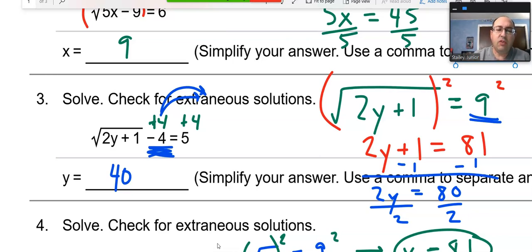I know that they say check for extraneous solutions in some of these, because if you take the value that you get, in this case, we ended up with 40, and we plug it back in, we're supposed to get 5. We end up getting 5, right? 2 times 40 is 80. And then you add the 1. That's 81. We take the square root. The square root would be 9. 9 minus 4. And you do end up with a 5.